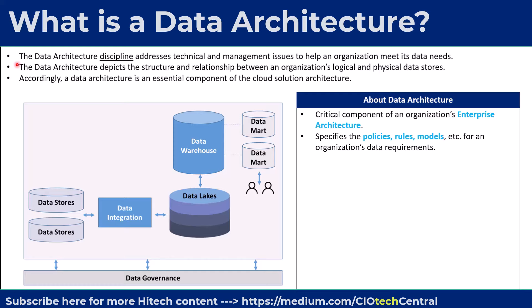All these policies, rules, etc., fall under the umbrella of the organization's data architecture. As we will see in later slides, the data governance part of the data architecture addresses those areas. A data architecture also shows in detail all the data flows between various data sources and data stores of an enterprise.